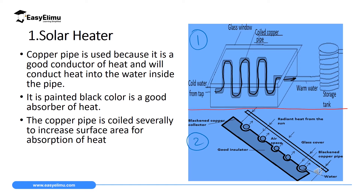The copper wire is painted black because black substances are good absorbers of radiant heat, allowing it to absorb maximum heat from the sun. There is also a glass window, whose function we will discuss shortly. We use copper because it is the best conductor of heat, followed by aluminum, then iron, then lead, with wood being a poor conductor.